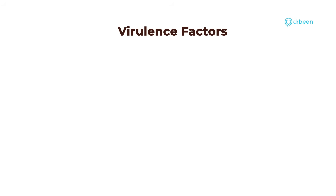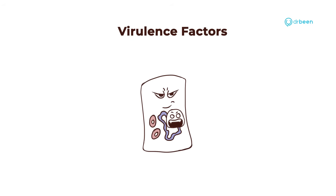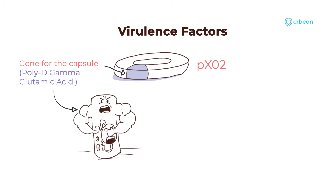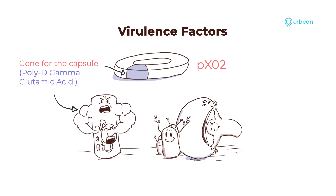Now let's get back to its virulence factors. As mentioned earlier, Bacillus anthracis has two plasmids containing the genes for its virulence factors. PXO2 encodes the genes for the capsule. Bacillus anthracis has a unique capsule made of proteins — poly-D-gamma-glutamic acid. This protein capsule helps the pathogen avoid phagocytosis, making it an important virulence factor.